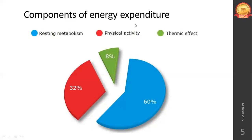From the pie chart, 60% of energy consumption is spent just to maintain your BMR. About 32% goes to physical activity — this includes not just exercise but also household chores, climbing stairs, walking pets, cooking, and bathing. Any voluntary movement counts as physical activity. The remaining 8% is the thermic effect of food.